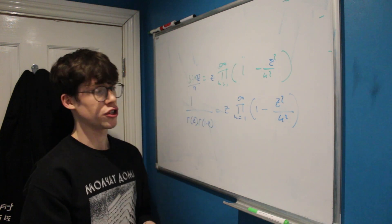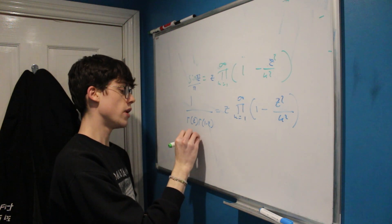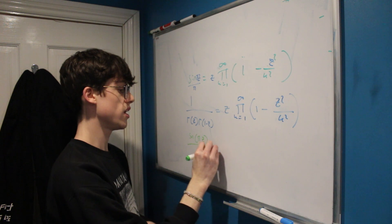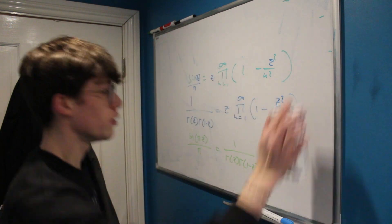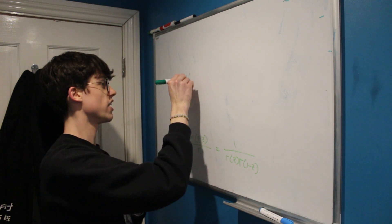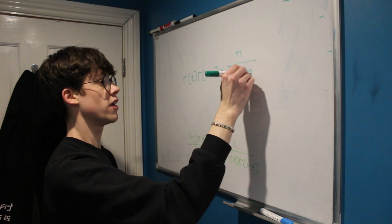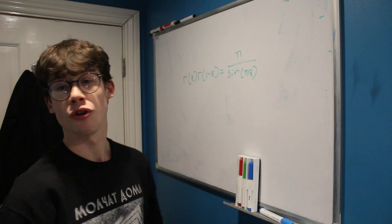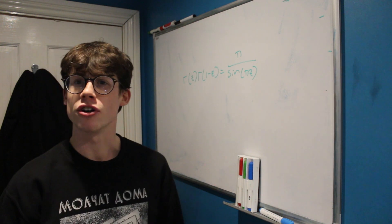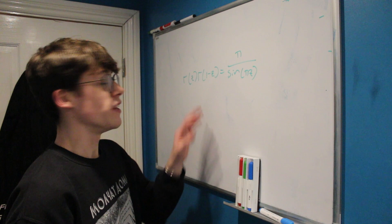Since these expressions now perfectly match, we conclude that sine pi z over pi equals 1 over gamma of z times gamma of 1 minus z. Taking the reciprocal, we finally arrive at Euler's reflection formula: gamma of z times gamma of 1 minus z equals pi over sine pi z. This is a great example of one of many uses of the infinite product form of the gamma function, revealing relationships that might not otherwise be clear.